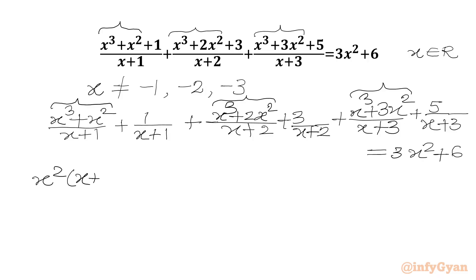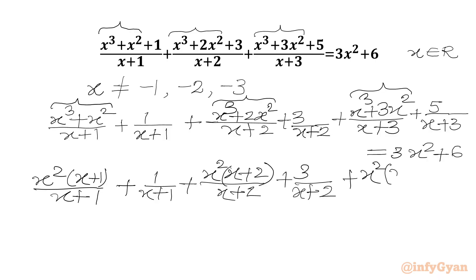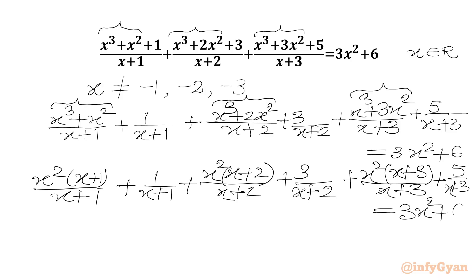So we write x² common out. In the bracket we get (x+1) over denominator (x+1), plus 1/(x+1). Then we take x² common from the second term, giving (x+2)/(x+2) in the bracket. Then for the third term we take x² common, giving (x+3)/(x+3), plus 5/(x+3). Now (x+1)/(x+1), (x+2)/(x+2), and (x+3)/(x+3) will all cancel.